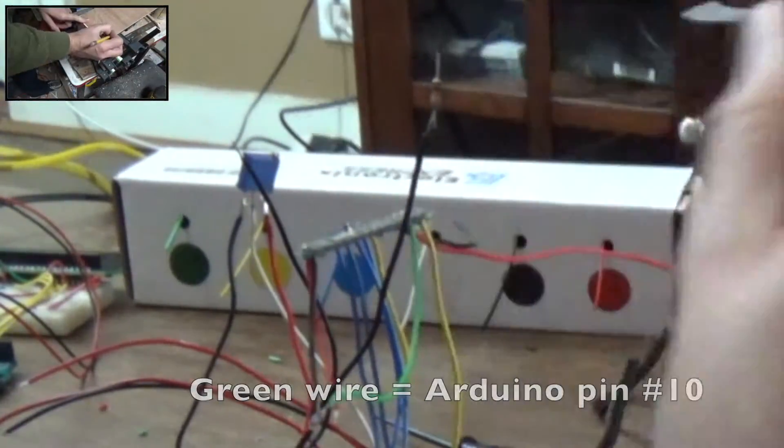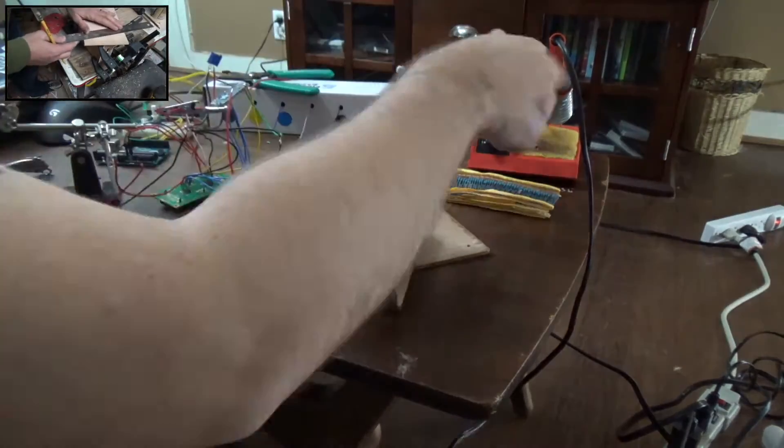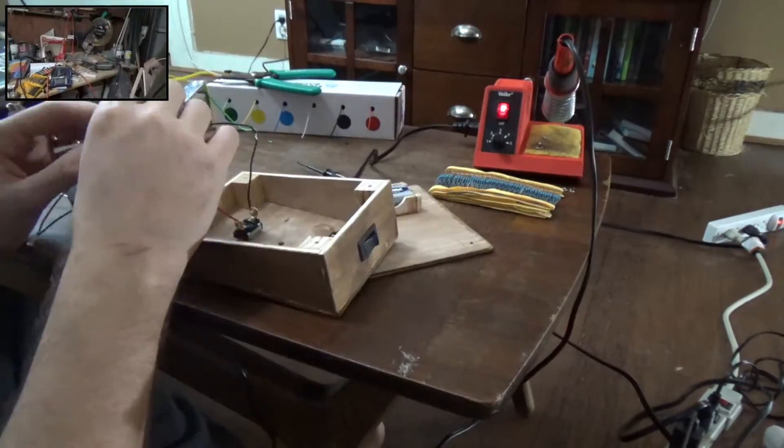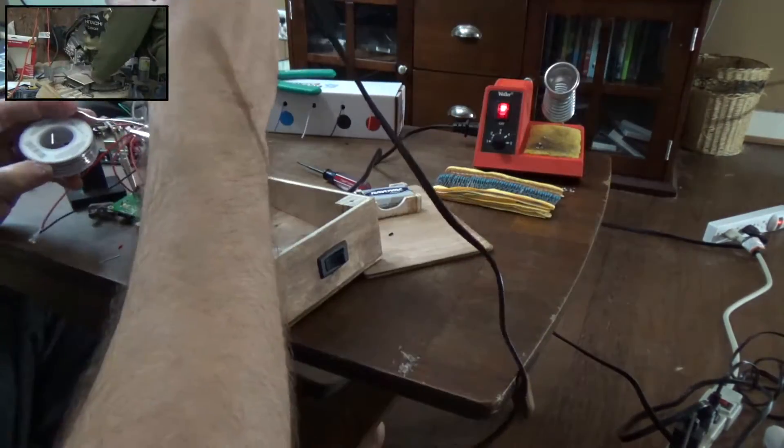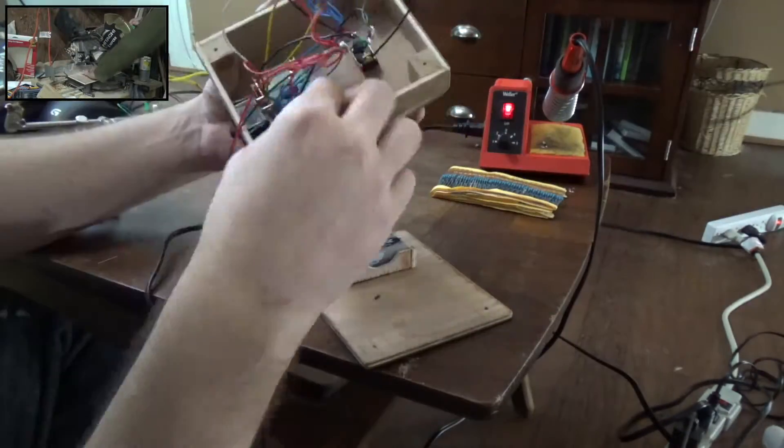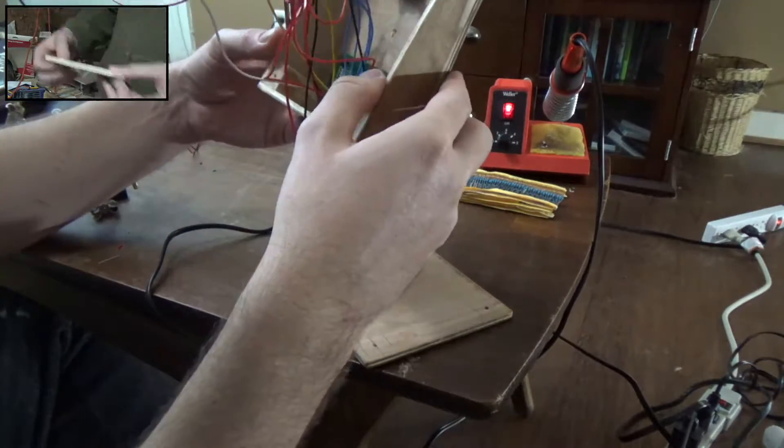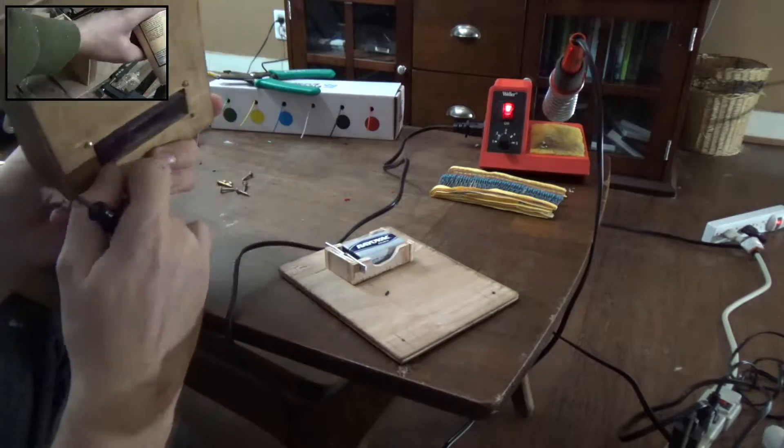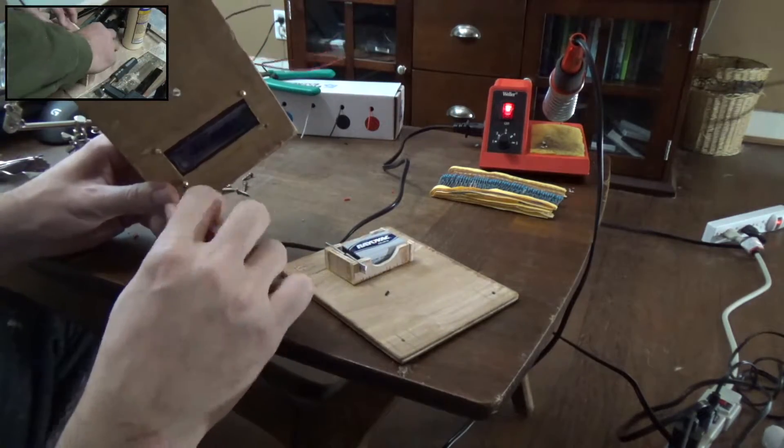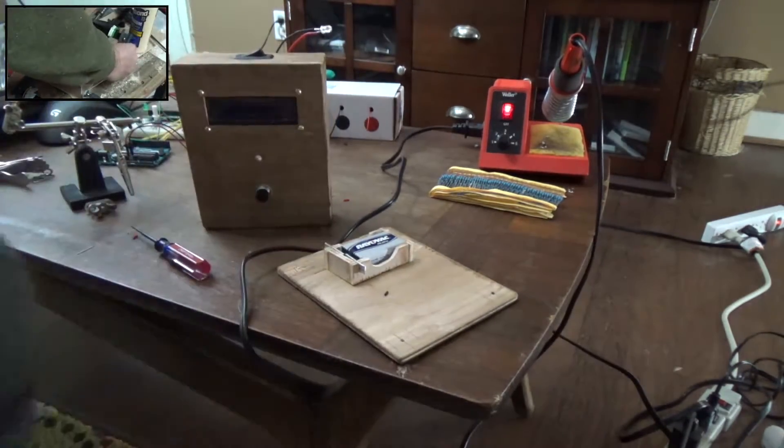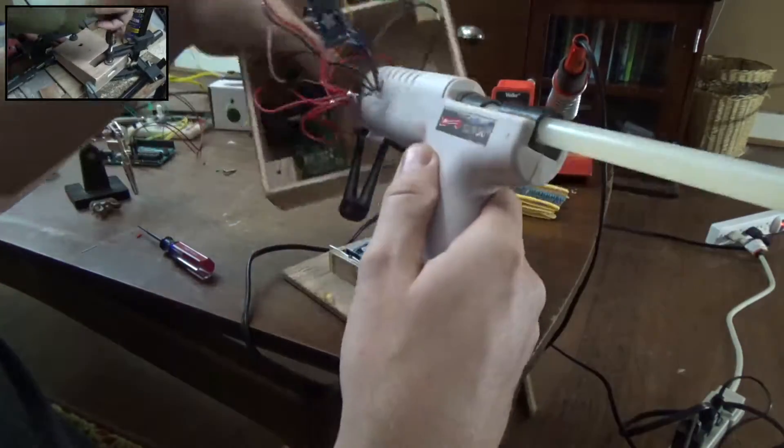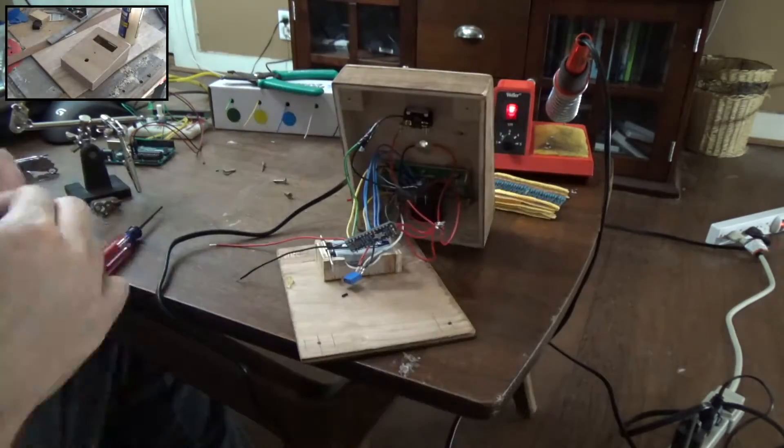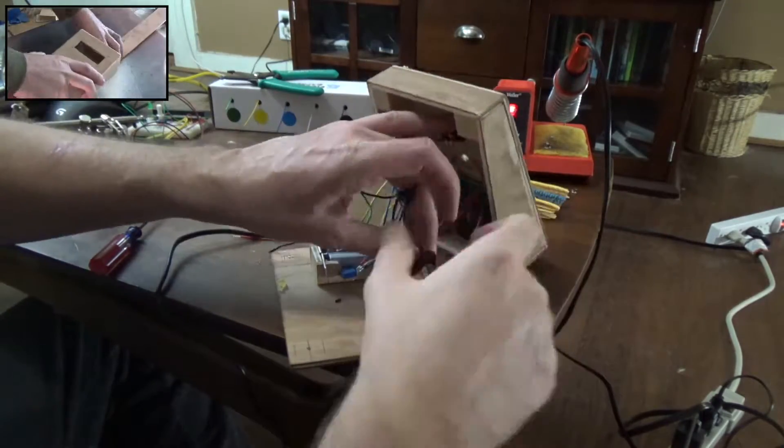Now I'm just soldering all the black wires to the black wires and the red wires to the red wires. I need to install the LCD and then I'm going to hot glue the LED into its little hole. Now I just need to wrap all the exposed solder joints with some electrical tape.